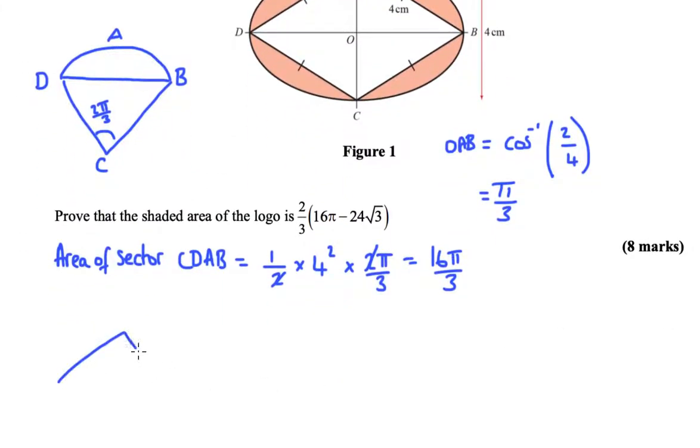Area of triangle DAB, which has two sides of length four and an angle of two pi over three. Area DAB we can do half a b sine c, so that's going to be half of four times four times sine of two pi over three, which is four root three.